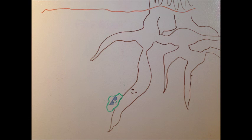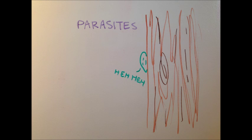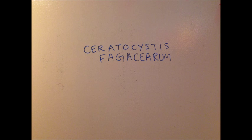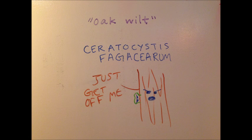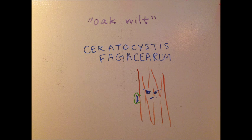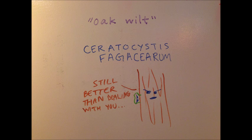So far we have only talked about the positive interactions fungi have with other organisms, but we have to remember parasitic fungi — an example being Ceratocystis fagacearum, which kills oak trees by infecting them with oak wilt. Once a single oak tree is affected, the disease can spread rapidly. It usually kills a healthy tree within a year, and the intertwined roots of the trees only help the fungus spread faster.